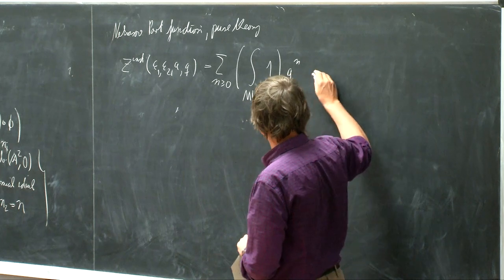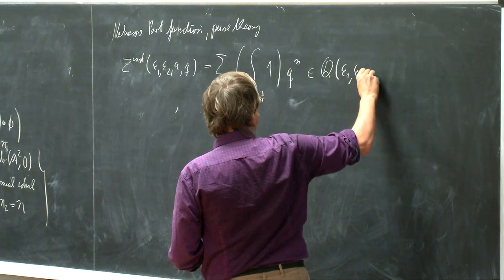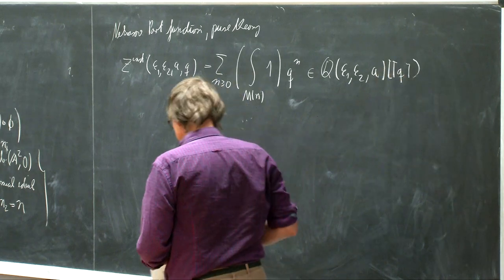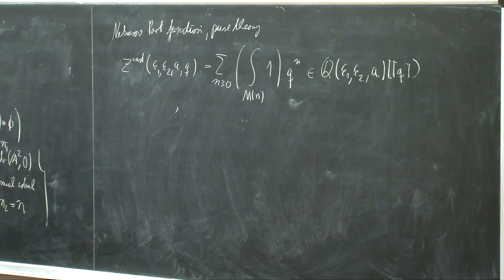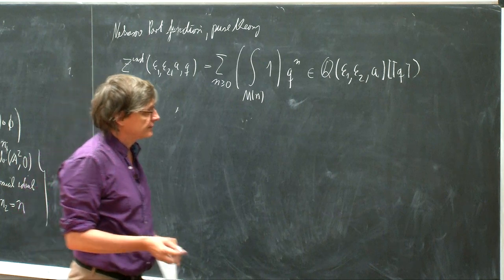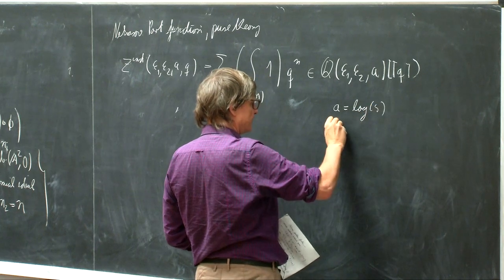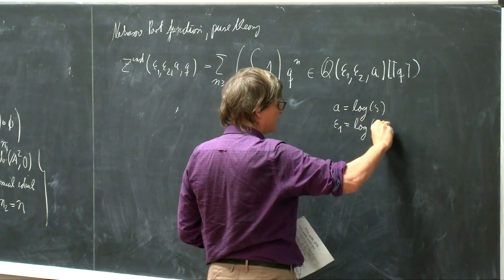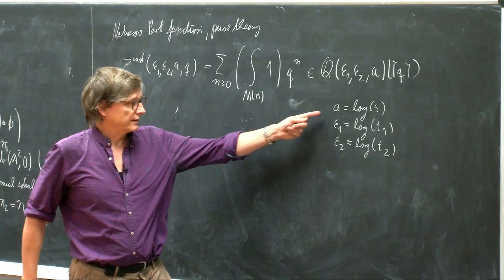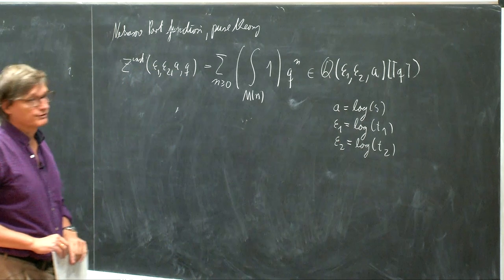We apply this localization formally. So this will be an element in the field of rational functions in epsilon_1, epsilon_2, A, and then obviously the power series is in Q, where we just apply the localization formula. And I should say that A is equal to the logarithm of S, epsilon_1 is equal to the logarithm of T1, and epsilon_2 is equal to the logarithm of T2. We had seen before that to an equivariant variable we associate something such that addition corresponds to multiplication.